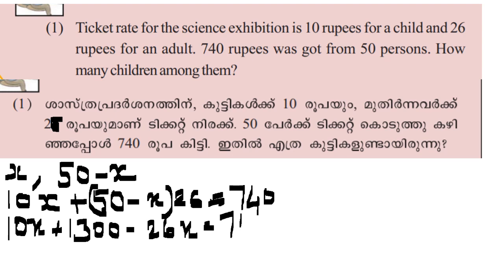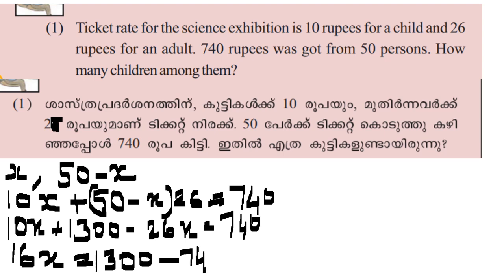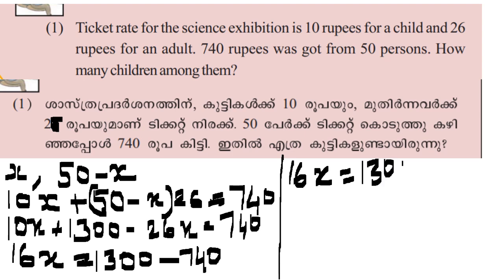This equals 740. We will bring x terms to one side: 26 minus 10 into x. The number on the other side gives us 26 minus 10 equals 16. So 16x equals 1,300 minus 740. 1,300 minus 740 is 560.